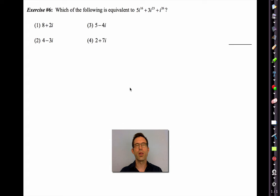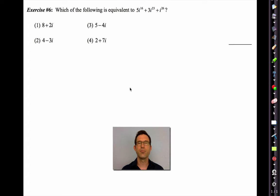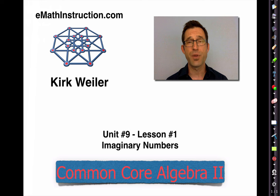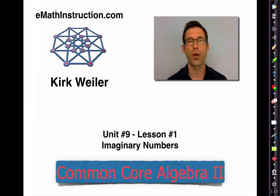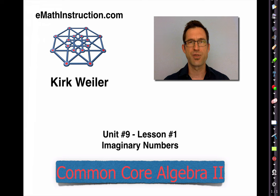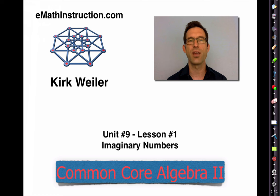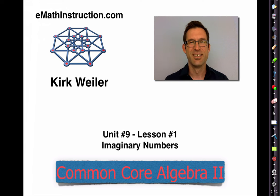We're going to work a lot more with i and its arithmetic in the next lesson. Today you got introduced to a new type of number — i, the square root of negative 1, the basis of all imaginary numbers. In the next lesson, imaginary numbers are going to give rise to a broader class of numbers called complex numbers. Thank you for joining me for another Common Core Algebra 2 lesson by eMath Instruction. My name is Kirk Weiler — until next time, keep thinking and keep solving problems.